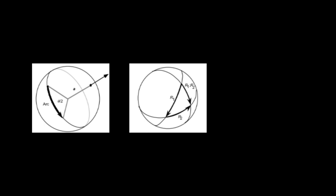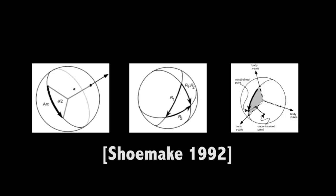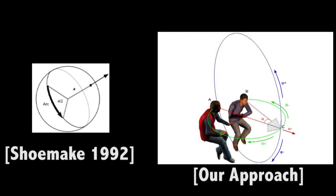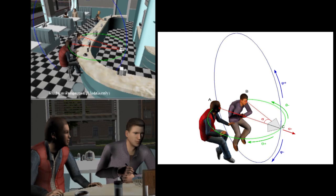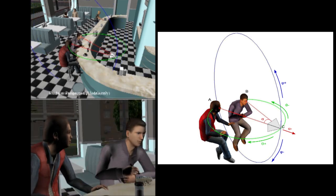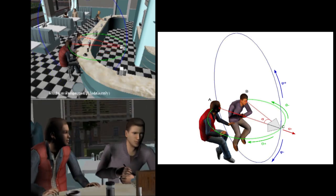This representation can be viewed as a generalization of the arc ball camera principle to two targets. Where a normal arc ball camera is defined in polar coordinates, locally to one target, and always pointing to the center of the target, the Toric Space defines three parameters such that every triplet of values — alpha, theta, and phi — represents a single camera position, with a camera orientation that automatically ensures a specified on-screen composition of its two targets.